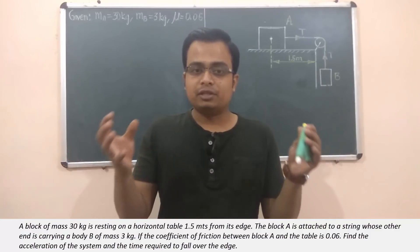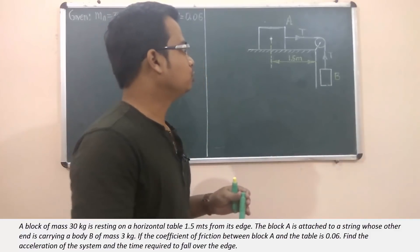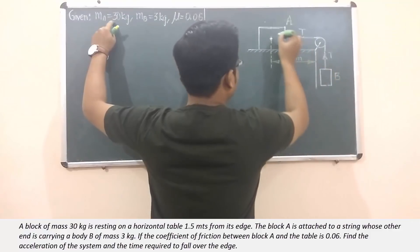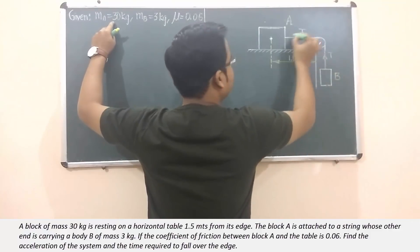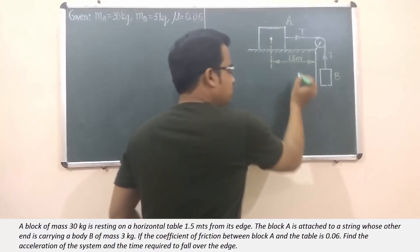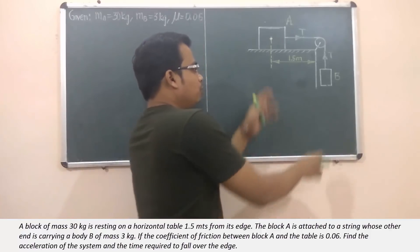I'm assuming that you've read the question, so let me explain what this arrangement is all about. There are essentially two blocks: block A and block B. Mass is 30 kg, this is 3 kg, both of them connected by a string which is actually passing over a pulley. Now this distance has been given to you, why? There is a specific reason.